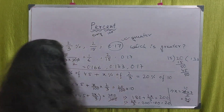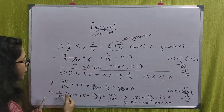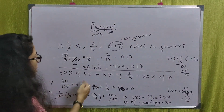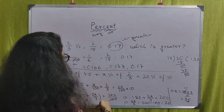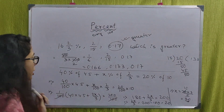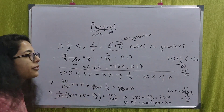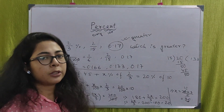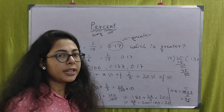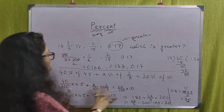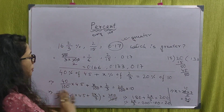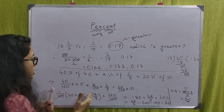If I multiply both sides by 100, then 100 is also a fraction. Both sides are multiplied by 100, so 100 is common. This makes it easy to calculate.